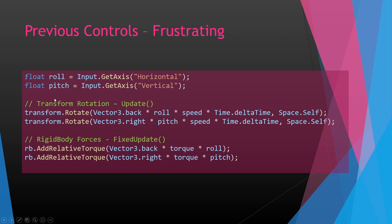I'm showing two different sets of code — one for transform rotation and the other for rigid body forces. We were only getting roll and pitch values from the horizontal and vertical axis, with no yaw value. With transform rotation, you do transform.Rotate with Vector3.back times your roll input value — usually non-analog, just one, negative one, or zero — times your speed times Time.deltaTime, using Space.Self. Same for pitch. With rigid body, it's very similar: you use AddRelativeTorque with the same Vector3.back times your torque value times roll or pitch input.